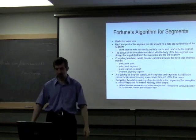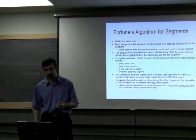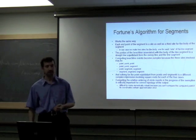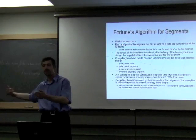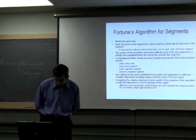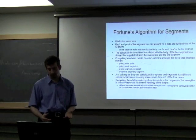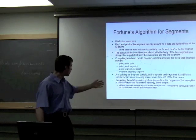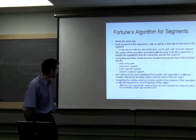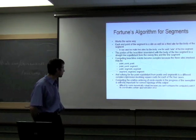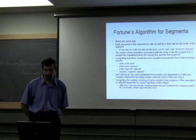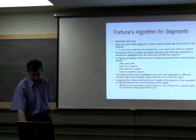Fortune's algorithm for segments works the same way. Each endpoint of the segment and the body of the segment is modeled as sites. We actually model each side of the body as separate sites. To compute beach line events, you have to find the circle inscribed by all combinations of point and segment sites, which require different complicated equations in each case, and those contain square roots, which makes it numerically very difficult to come up with an algorithm that's actually going to work correctly.